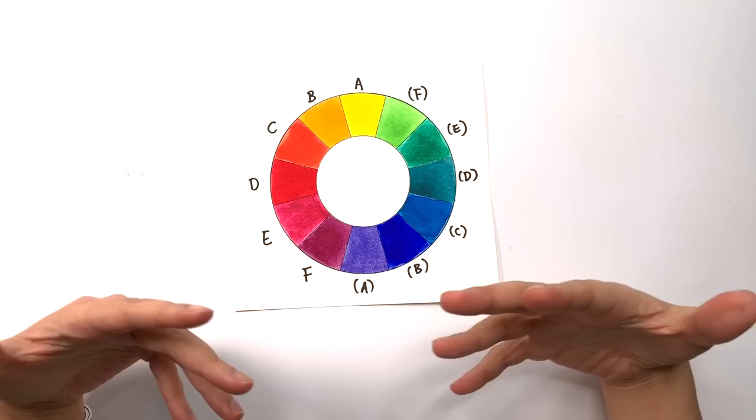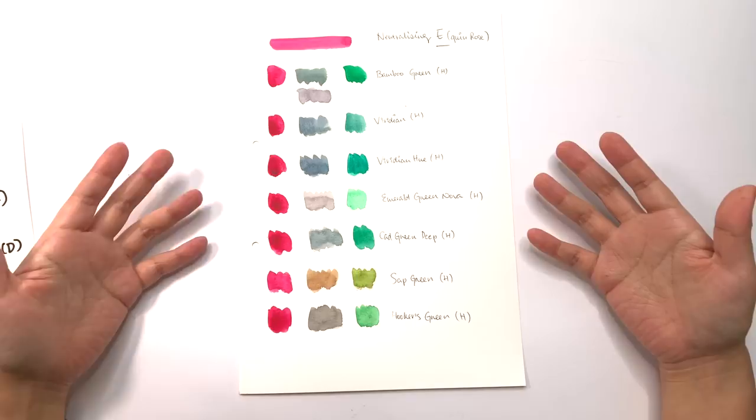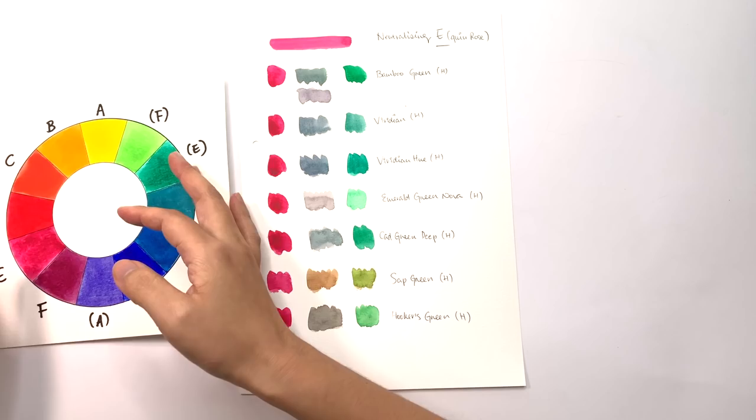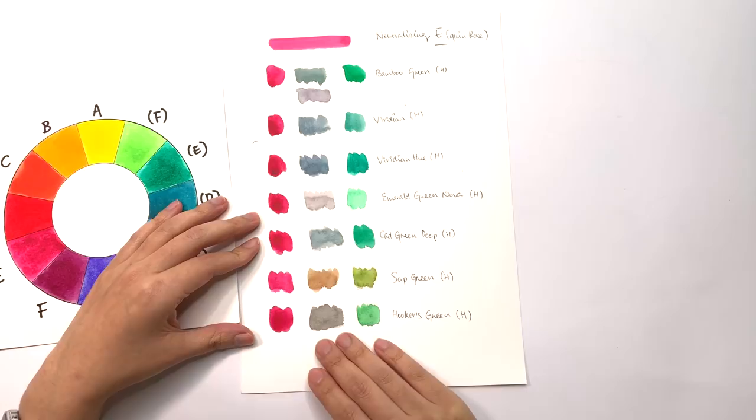I grabbed a scrap piece of paper and I grabbed all the greens around about this area and I mixed it with the Quinacridone Rose and checked to see what kind of color mixes they provided. I personally really liked the neutral color that was produced by mixing the hooker's green with the Quinacridone Rose. So I went with this, but you might like a different one.